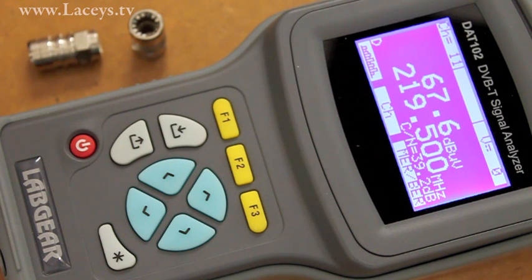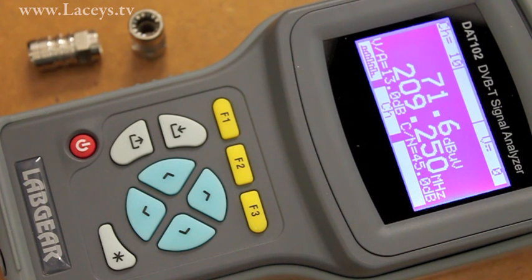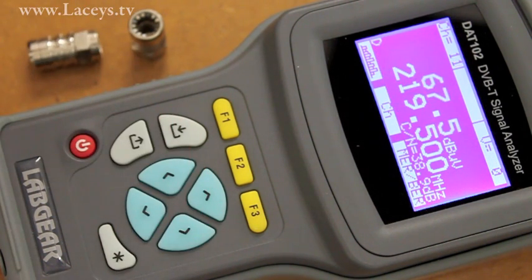DAT 102 automatically detects if your TV signal is digital or analogue, showing D for a digital channel or V over A being the vision to audio ratio for an analogue, in the lower left of the screen. Carrier to noise appears to the right.